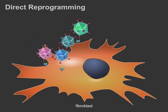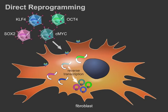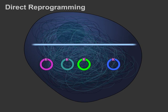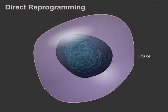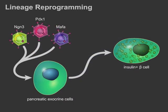Direct reprogramming involves the ectopic expression of specific genes that confer a new transcriptional program on a cell. More recently, the expression of four factors in fibroblasts led to the generation of stem cell-like cells, or induced pluripotent stem cells. After viral integration, endogenous stem cell-specific genes are reactivated and remain active even after viruses are silenced. Follow-up work has shown that iPS cells can be generated using non-integrating viruses that transiently express these four factors. In addition, direct reprogramming has been used to generate insulin-producing beta cells from pancreatic exocrine cells — a process termed lineage reprogramming, because a differentiated cell type is generated from another differentiated cell type.